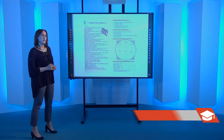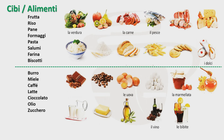Poi una lezione di comprensione del testo 'L'appetito viene mangiando' del manuale scolastico pagina 66. Ma prima cominciamo con questa attività. Allora, avete alcuni esempi di cibi e alimenti. Dovete scegliere dalla lista il nome che corrisponde alle foto seguenti. Nella prima lista abbiamo frutta, riso, pane, formaggi, pasta, salumi, farina e biscotti.